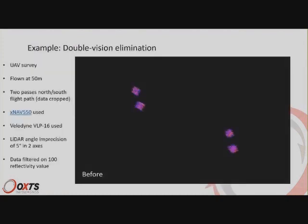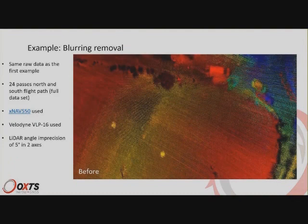Here you can see an example of double vision. These are two targets, not four. There are only two square targets that you should be able to see in this point cloud. This is from a UAV flying over two targets forwards and then backwards, about 50 meters above the ground. There was about a five degree error on some axes that the user had measured by eye using an XNAV550 and a VLP16. This is what he got before bore sighting, and after bore sighting you can see there are now two targets as there should be, and both are much clearer, sharper, and square as they should be.